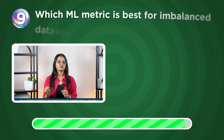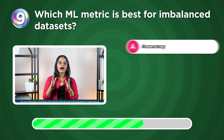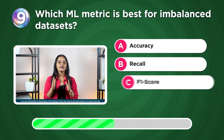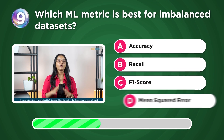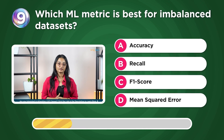Which ML metric is best for imbalanced datasets? Accuracy, recall, F1 score, or mean squared error?